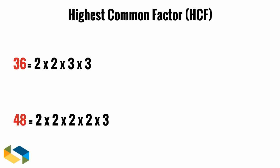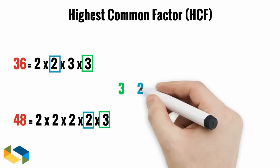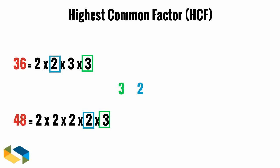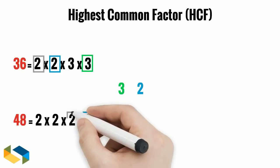Now, find the common factors from both these sets. Let's see. We have a common 3 here. A 2 which is common as well. And one more too.